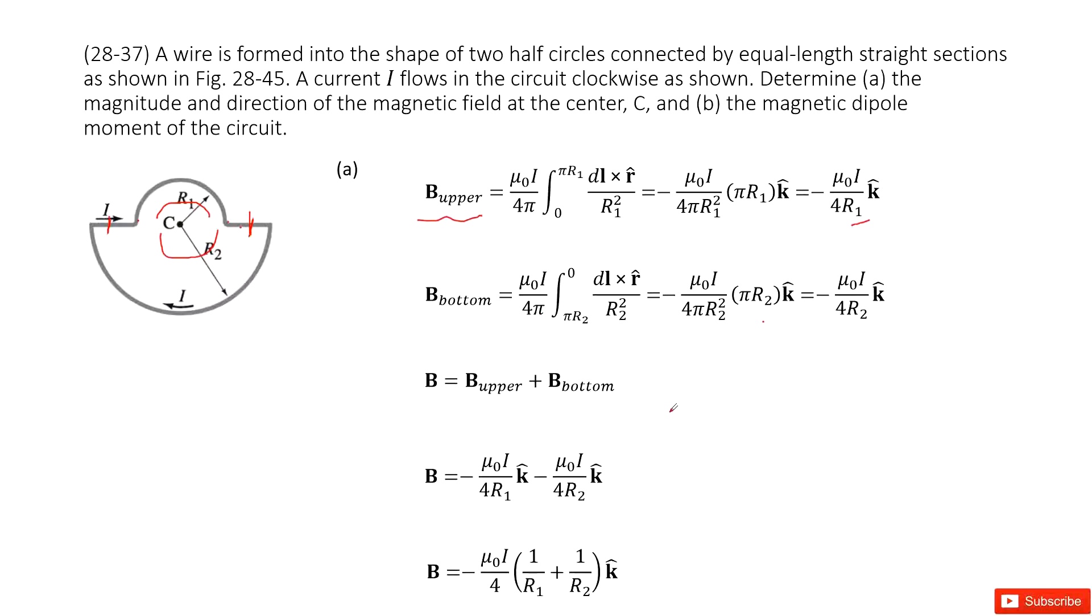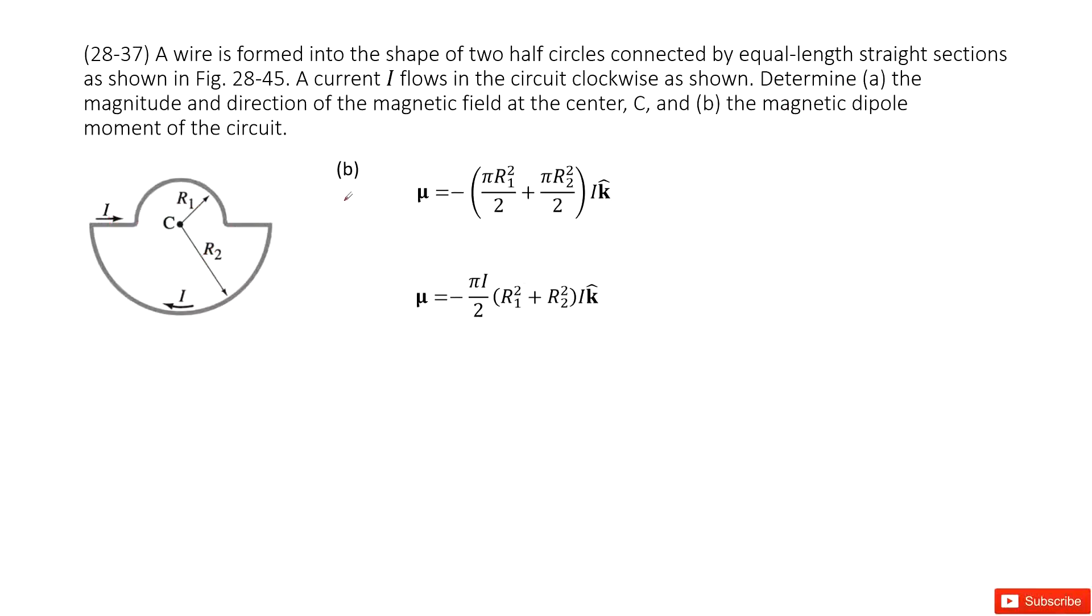Now, as we can see, magnetic field is a vector. So we add these two vectors together, we get answer there. The next one is to find the magnetic dipole moment of this circuit.